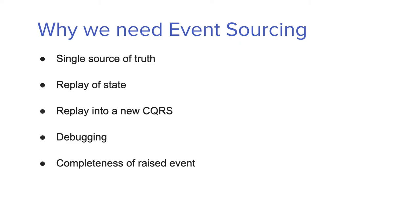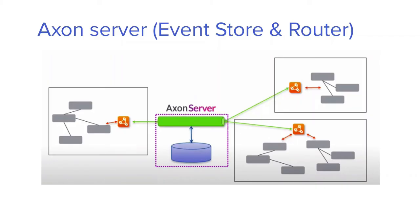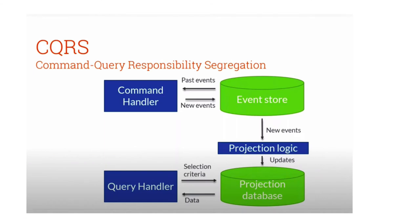For CQRS there are various implementations available. Axon is one of them — I recently explored Axon Server. It provides a CQRS implementation by segregating read and write, and you can implement it very easily for any Spring Boot Java application. You just need to add the Axon dependency in your pom.xml, run your Spring Boot REST APIs, and write your command handlers and query handlers.